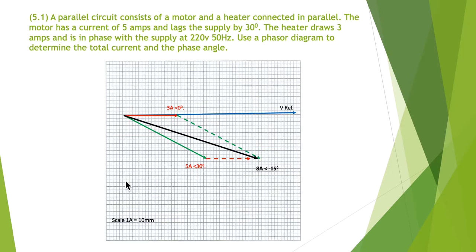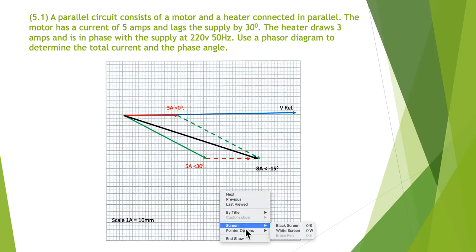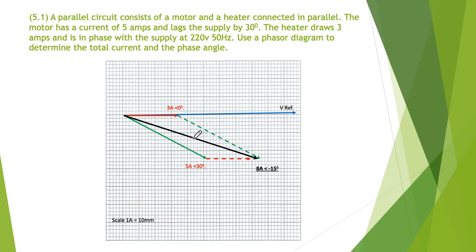Here's the final phasor diagram. You can see here the length of the phasor is 8 amps, and this phase angle in here is minus 15 degrees or 15 degrees lag.